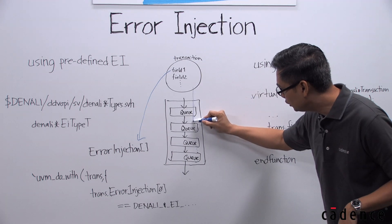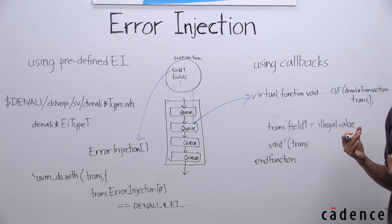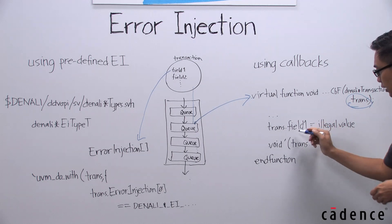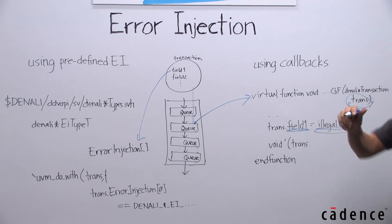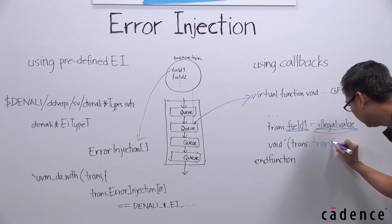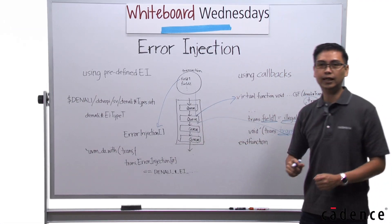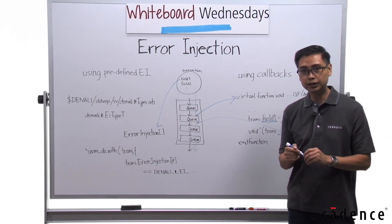So, let's say the transaction flows here, and then at this point, you want to use the callback. By using the callback function, you get the transaction. Once you get the transaction inside it, you can modify whatever field there is in the transaction, and put your illegal value. So, you've gotten the transaction, modified the field to an illegal value. Now, you can put back the transaction using a transset function. With this transset function, you put back that transaction containing the illegal value, which will then be transferred by the VIP. Thus, it injects the error that you want.